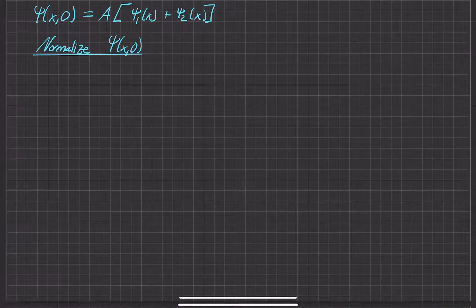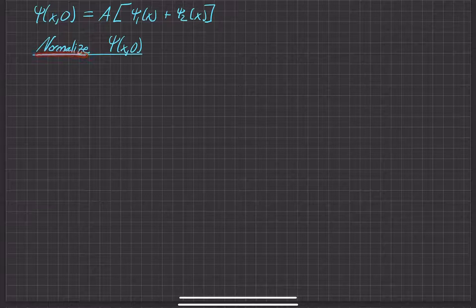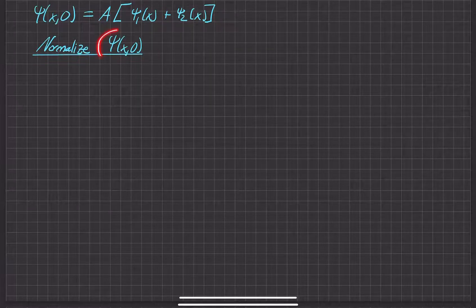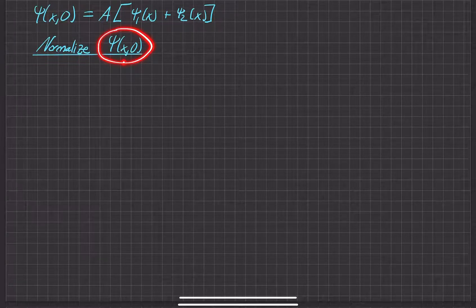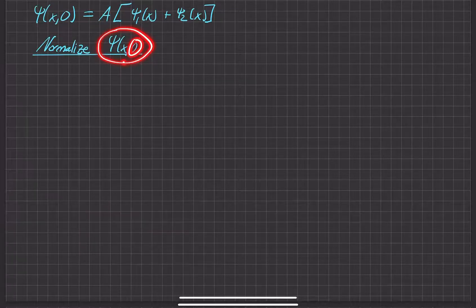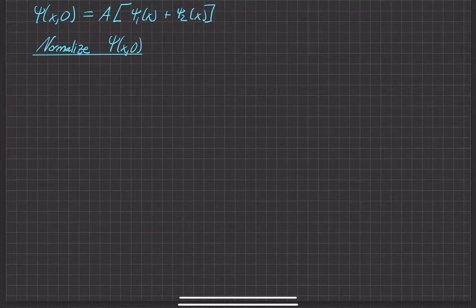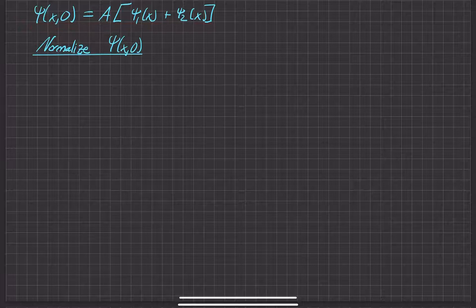In this part of the problem, our goal is to normalize the wave function, which is a time and space dependent wave function, but it's just frozen at time equals zero. So this is just a snapshot of the full wave function at time equals zero.